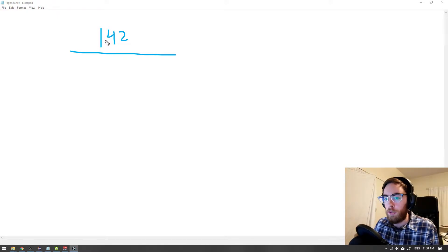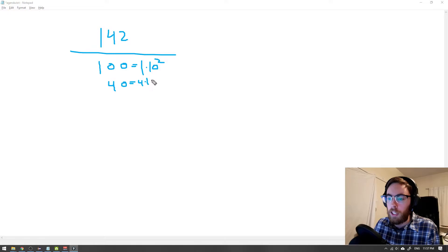And we think about how do we interpret 142. So what most people do is that the 1 here symbolizes 100, which could also be written as 1 times 10 to the power of 2. And the same goes for 40 here, that 40 could actually be broken down into 4 times 10 to the power of 1. And 2 here will be 2 times 10 to the power of 0. So you can see that we see a nice pattern here.